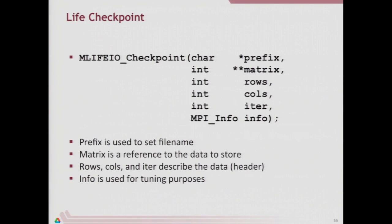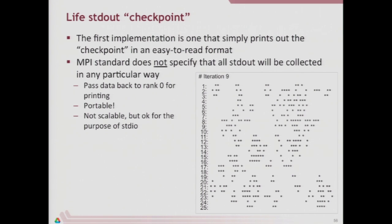The first implementation we're going to look at — which some of you have run and know breaks at large scale — is a standard out version. All it does is print to standard out. The MPI standard doesn't actually guarantee that all data from all processes will reach standard out, so we make a more conservative assumption that rank zero can write to standard out. In this implementation, we pass all data back to rank zero and then print it from there. That's relatively portable, but obviously not scalable.